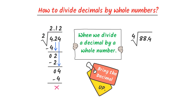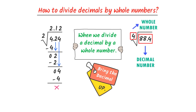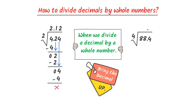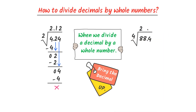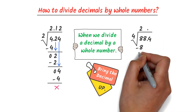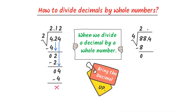Secondly, we know that 88.4 is a decimal number and 4 is a whole number. So I bring this decimal straight up. Now I select the first digit 8. We can see that 8 is greater than 4, so I don't need to select the second digit. We know that 4 times 2 is equal to 8, so 8 minus 8 is equal to 0.